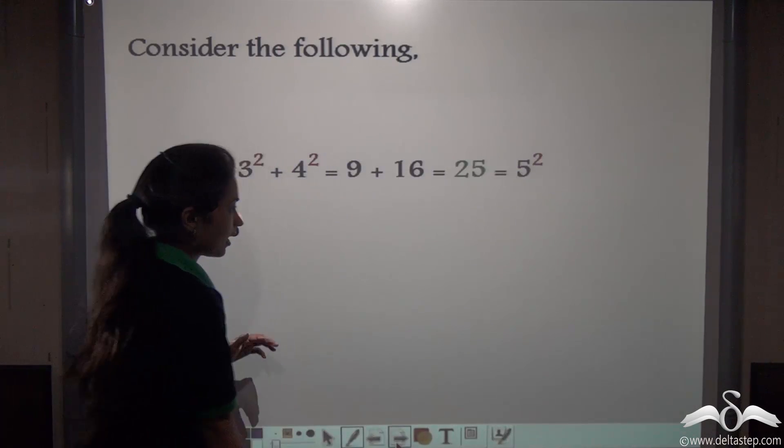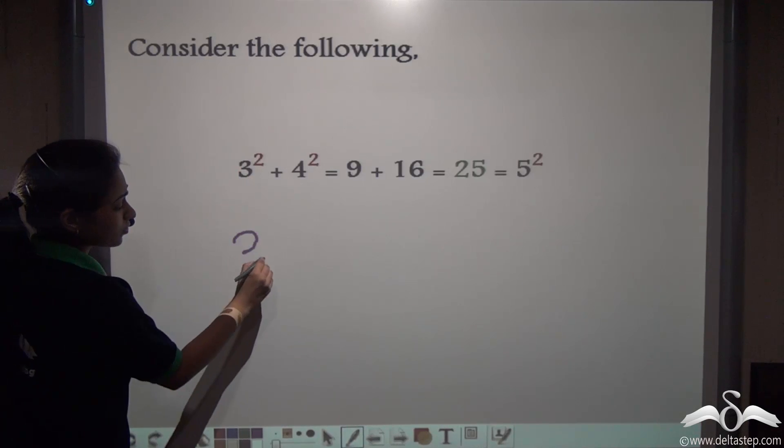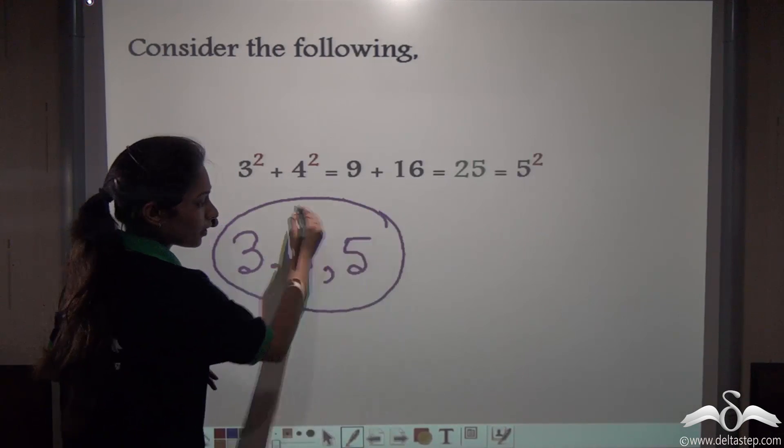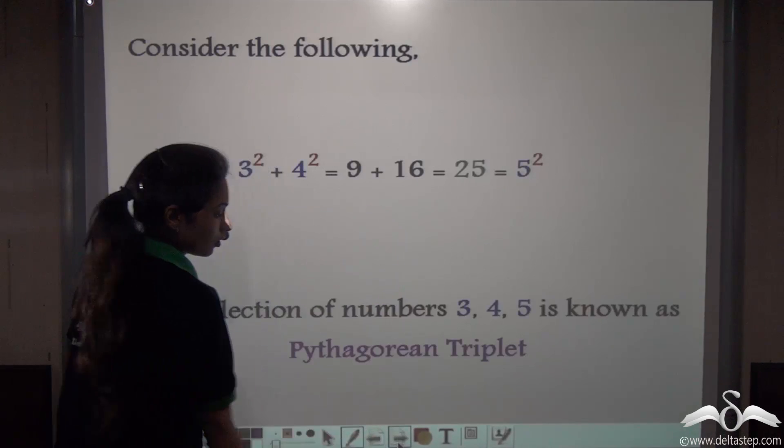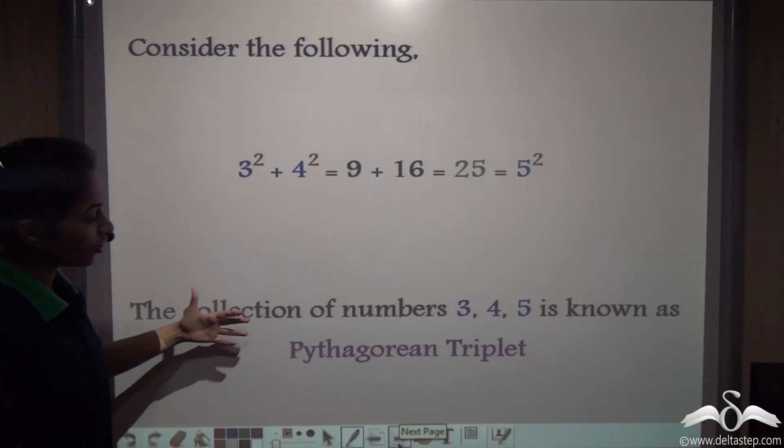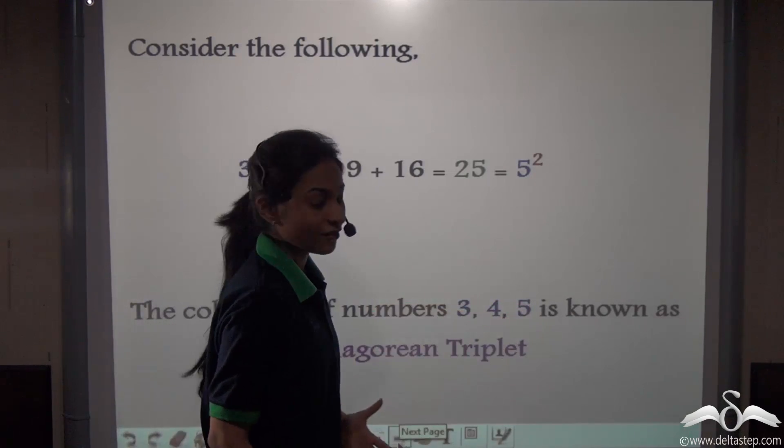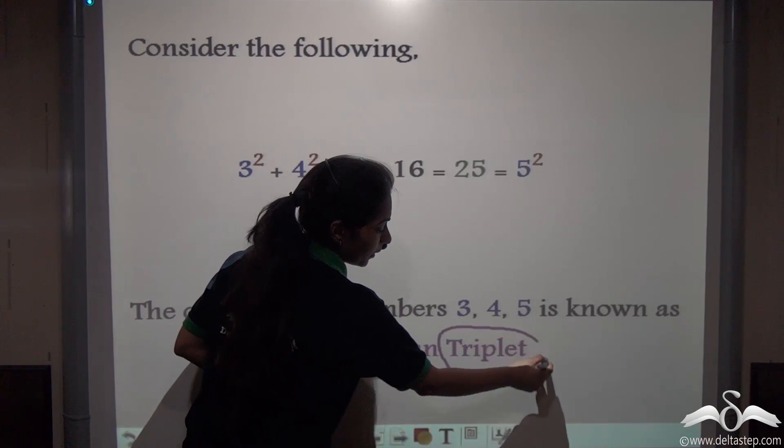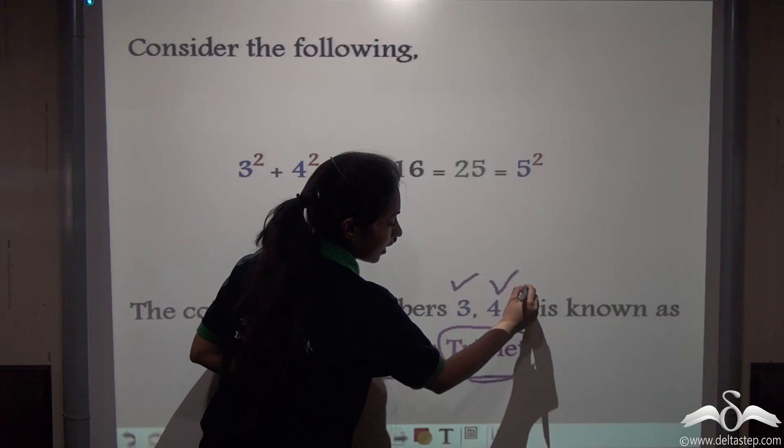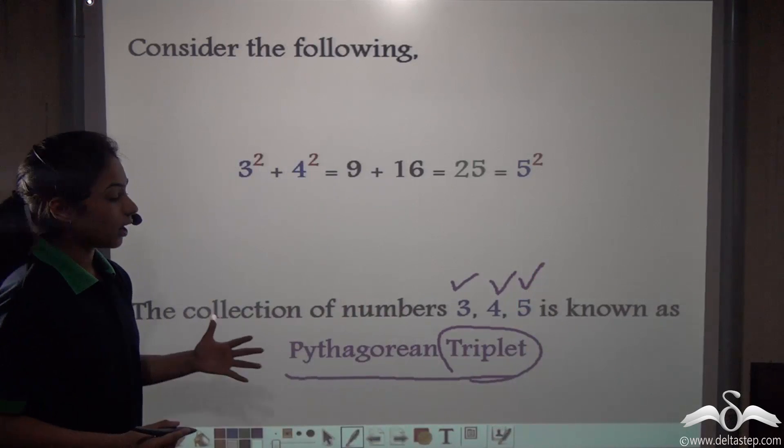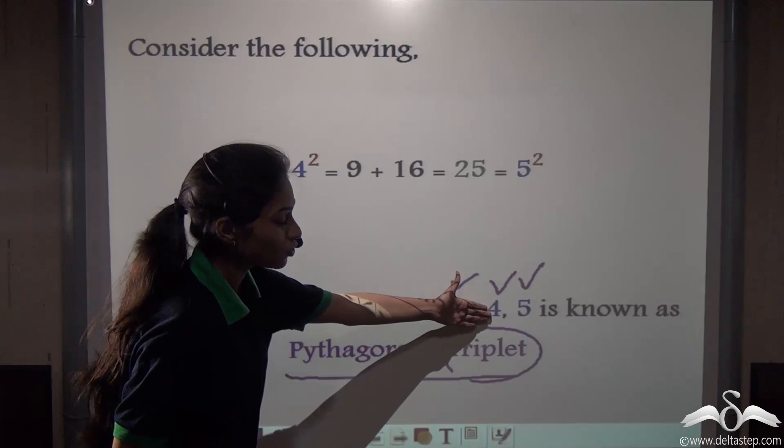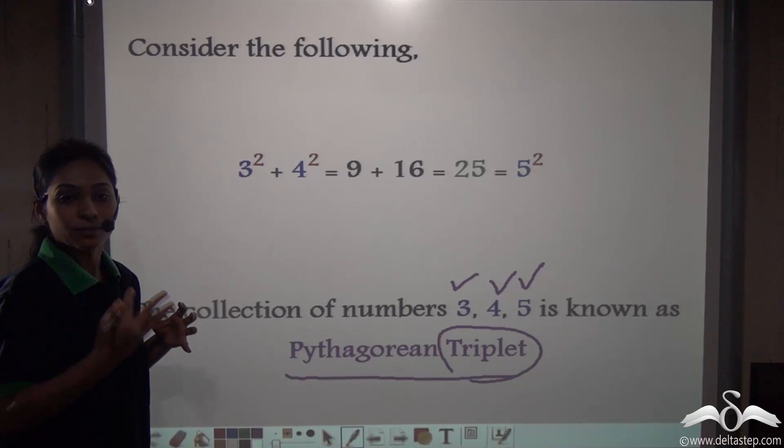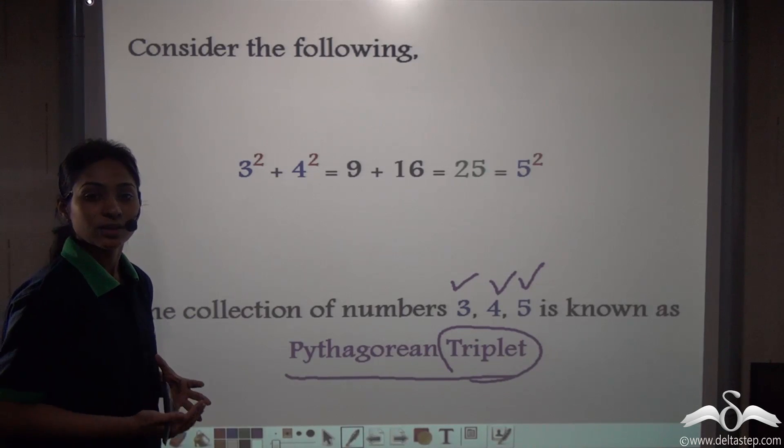So 3 squared plus 4 squared gives us actually 5 squared. So we can say that the numbers 3, 4, and 5 have a relation among them. It is actually the collection of numbers 3, 4, and 5 is called the Pythagorean triplet. The triplet here refers to these 3 numbers. Now 3 squared plus 4 squared gives us 5 squared. This relation among 3 numbers is called Pythagorean triplet.